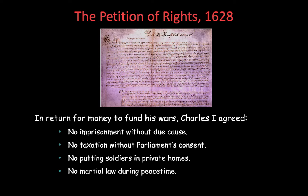What does the Petition of Rights say? Parliament is trying to reassert the traditional rights of the English people — rights they had for about 400 years since 1215. You couldn't imprison them without due cause — that goes against the Magna Carta. You can't tax without consent. You can't force citizens to quarter soldiers in private homes. And no martial law during peacetime.